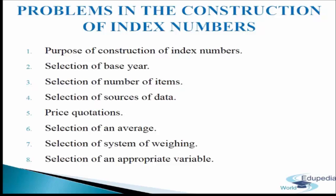Problem 5: Price quotations. We require unbiased price quotations so that adequate accuracy can be maintained. Price quotations can be obtained from more than one agency to check accuracy. Some reliable journal or magazine can also be utilized. To ensure uniformity, a proper method of quoting prices should be adopted. There are two methods: first, money prices, where prices are quoted per unit of commodity (e.g., rice at 8 rupees 40 per kg); second, quantity prices, where prices are quoted per unit of money (e.g., 25 grams of rice per rupee). We also need to decide whether wholesale prices, retail prices, or government control prices are to be taken.